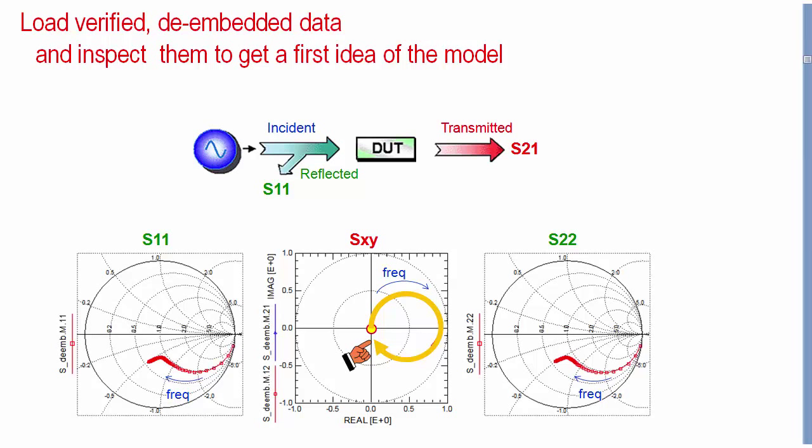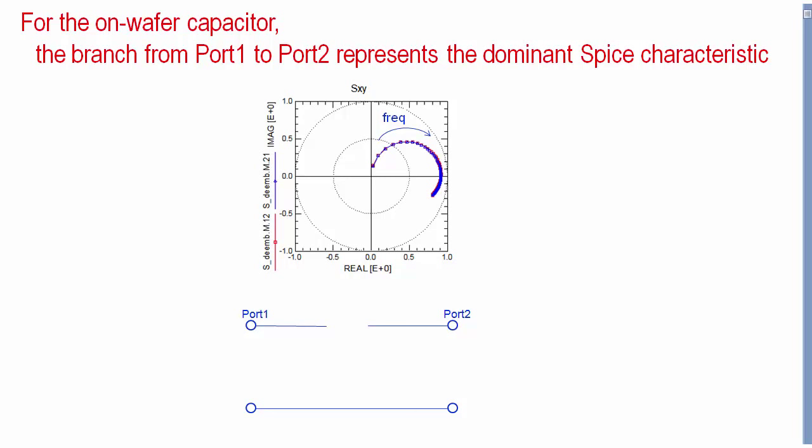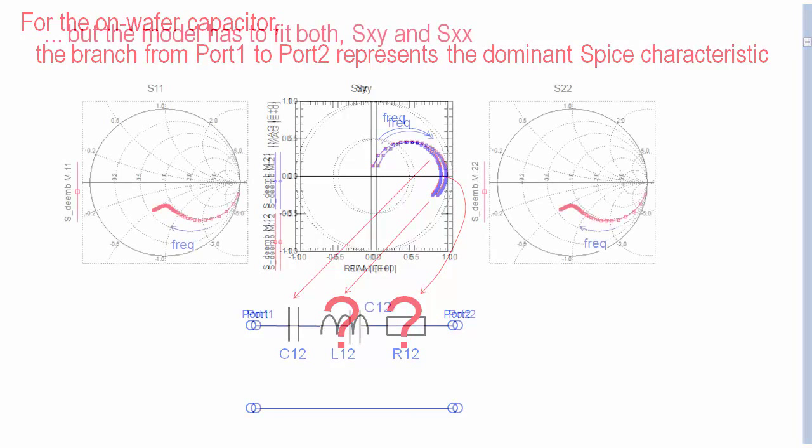This observation could lead to the following SPICE model. For DC, no transmission, we have an open. The increasing power transmission with increasing frequency could be a capacitor C12 between both ports. The trace beyond the maximum could indicate a resonance circuit, that would be inductor L12. And since the maximum with resonance is not equal to 1, we could add a resistor R12. However, this is not the correct way for developing a model from S-parameters.